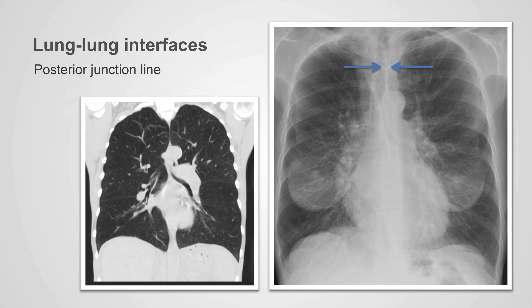If the two lungs touch each other posteriorly, as seen on this coronal CT scan, they can also form what's called the posterior junction line. This is seen on this examination posteriorly through the tracheal airway column, and again this should not be mistaken for pathology within the mediastinum.